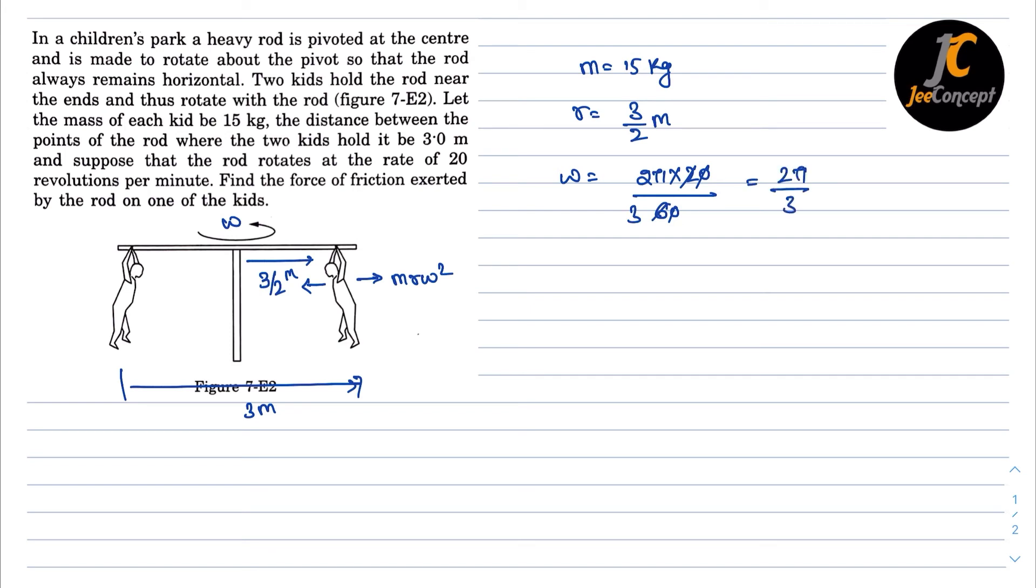Now the frictional force is going to be m r omega square. So this is going to be 15 into r is 3 by 2, into omega is 2 pi by 3, that means 4 pi square by 9.